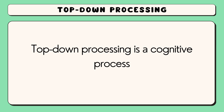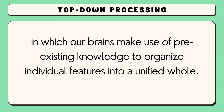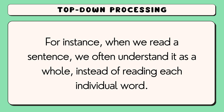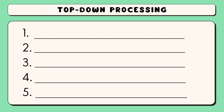Top-down processing is a cognitive process in which our brains make use of pre-existing knowledge to organize individual features into a unified whole. It starts with an overall concept or idea and then works its way down to the details. For instance, when we read a sentence, we often understand it as a whole instead of reading each individual word. In this video, we're going to look at five key features of top-down processing.